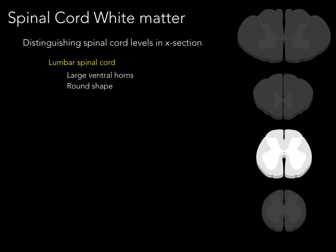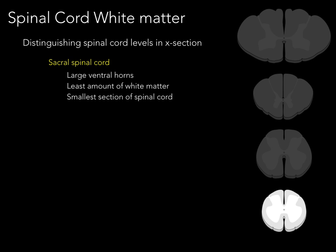The lumbar spinal cord has really large ventral horns and is round in shape. The sacral spinal cord also has a large ventral horn but has the least amount of white matter, making it the smallest cross-sectional segment of the spinal cord.